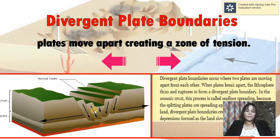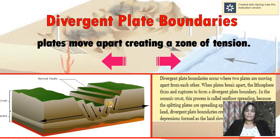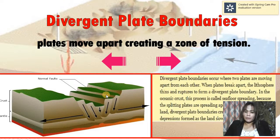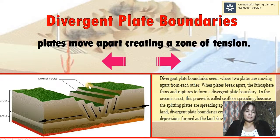But when this happens in the ocean, it will lead to the process called seafloor spreading. As we all know, seafloor spreading is the reason why the Pacific Ocean is getting narrower and the Atlantic Ocean is getting wider.